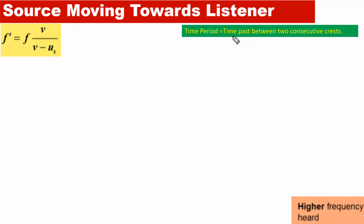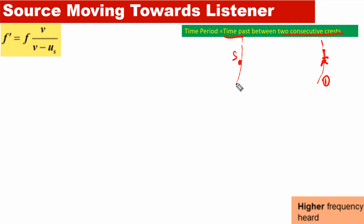Time period can be defined as the time passed between two consecutive crests. Let's say we have a source and a listener at a certain point. The source produces waves, and the first crest received by the listener is crest one. The source then produces another pulse, and after a certain period of time the listener receives the second crest. The time passed between these two crests is simply called the time period.